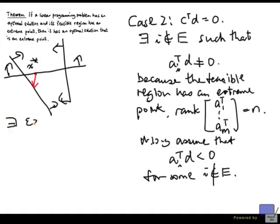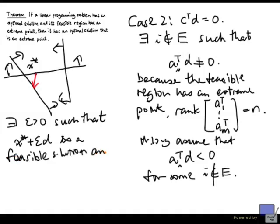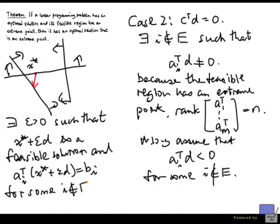There exists epsilon positive such that x-star plus epsilon d is a feasible solution, and a_i transpose times x-star plus epsilon d equals b_i for some i not in E. So how large can epsilon be? Well, we start from x-star, gradually increase epsilon. And the moment that we hit another inequality, we'll stop. So, that way we'll get a point that is still a feasible solution. But this time, there will be an inequality that is satisfied with equality at this new point.